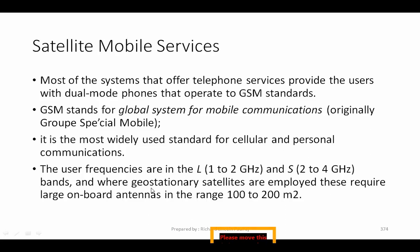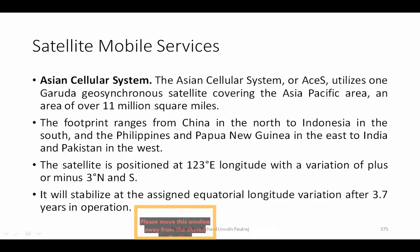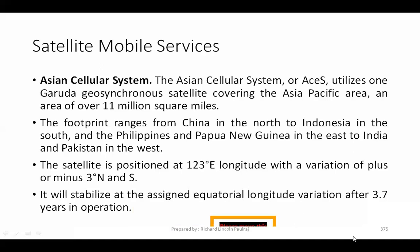GSM is the most widely used standard for cellular and personal communications. User frequencies are in the L band (1–2 GHz) and S band (2–4 GHz), where geostationary satellites are employed. These require large onboard antennas in the range of 100 to 200 square meters. We'll be looking into types such as the Asian cellular system, and these questions will often be asked in your examinations.